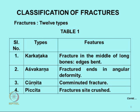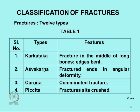The first type is called Karkataka — a fracture in the middle of the long shaft of a bone with edges bent but not too much deformity. Second is Ashokarna, where there is a mid-shaft fracture with gross angular deformity. Then there is comminuted fracture or Churnita, where the bone is fragmented into several bits. Then Pichita — a compression like a hammer blow, a crush fracture.